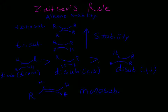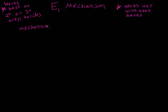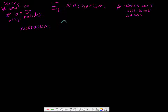When we form an alkene product where we have more than one possibility, we choose the most stable as our major product. Before going through the mechanism, E1 reactions work really well with tertiary and secondary alkyl halides.